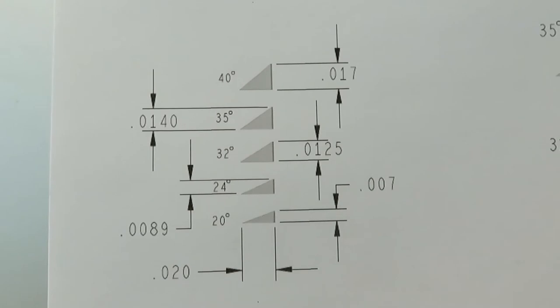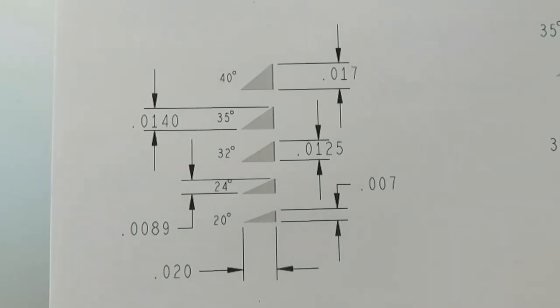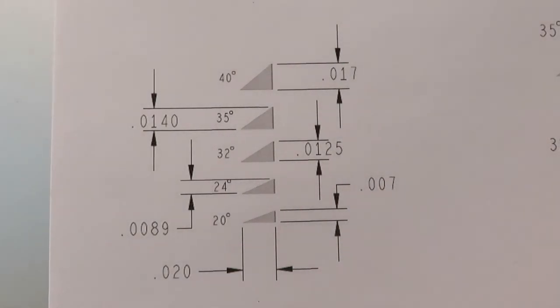So here you see those same angles, twenty, twenty-four, thirty-two, thirty-five, and forty. But all you're seeing is the first twenty thousandths of that edge magnified. It won't matter how thick the blade is back at the ferrule. This is the part that's most susceptible to damage and doing all the work of cutting. You can have it sharp all the way back here, none of this matters. This is what's doing the cutting.